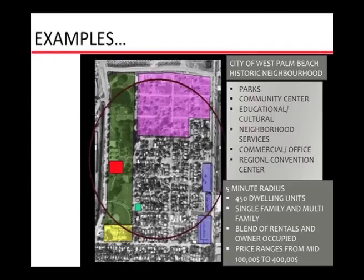Some examples show the updated neighbourhood unit applied to places like West Palm Beach. However, as time progressed, the green belt reduced and congestion increased. The 5-minute radius still exists, but it is no longer a walking radius — it has become a driving radius. The 1-mile distance that was walkable has become too much for people with the advent of automobiles, leading to significant congestion.